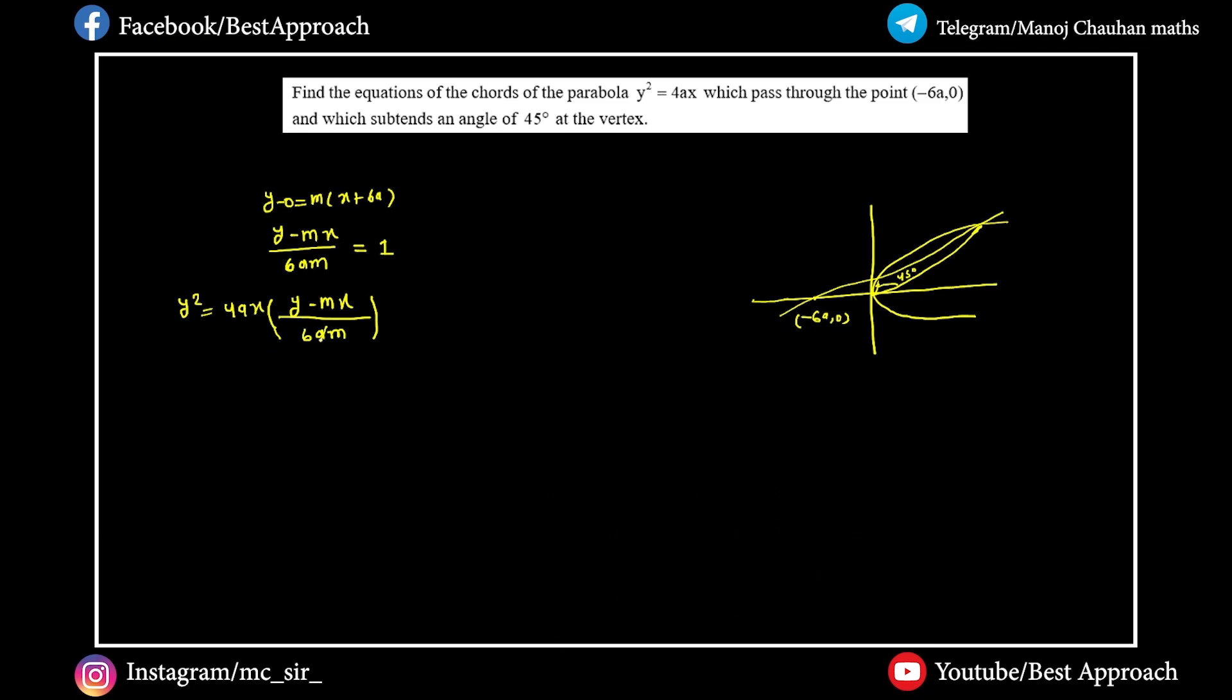Here we can cancel a and write y-mx divided by 6am equals 4xy divided by (y-mx)².